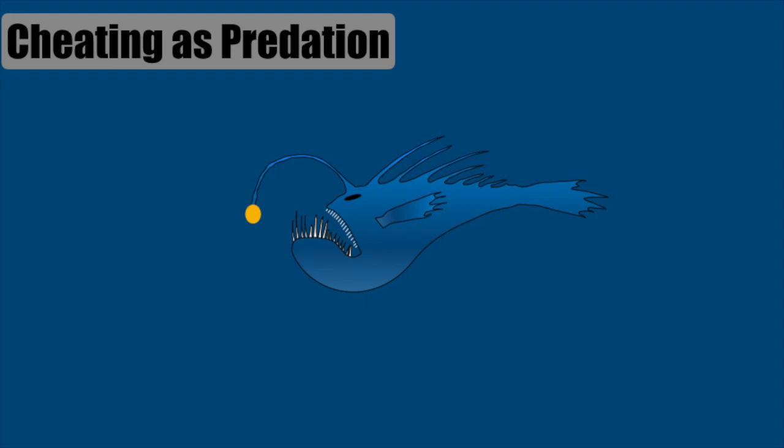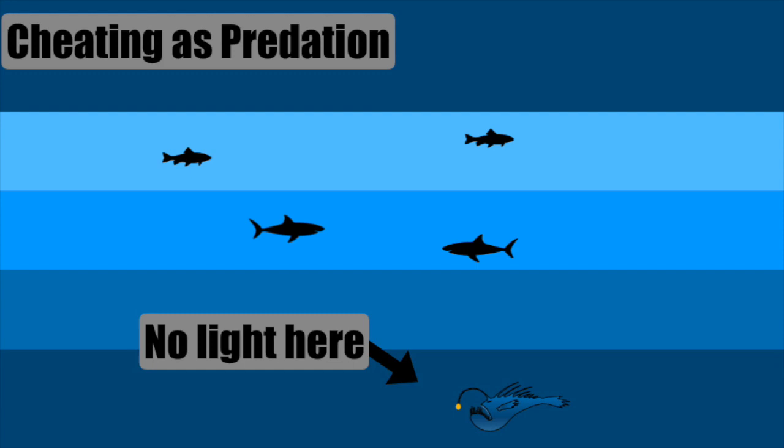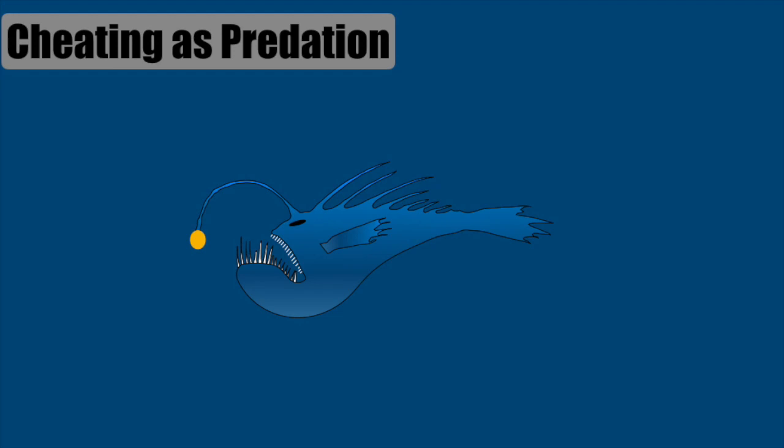Some animals use this approach of cheating to catch its prey. This is the angler fish. It lives in the deepest part of the ocean. Sunlight doesn't penetrate to that depth. This fish has an extended antenna growing out of its head.